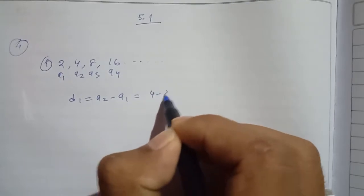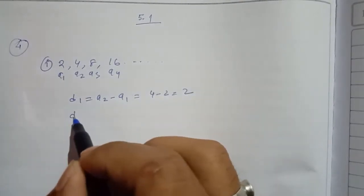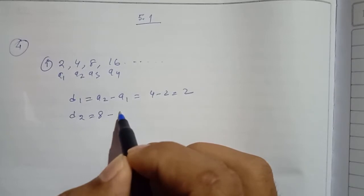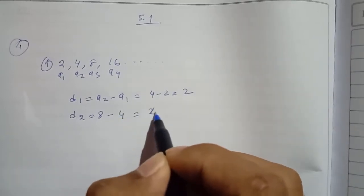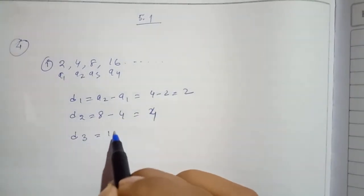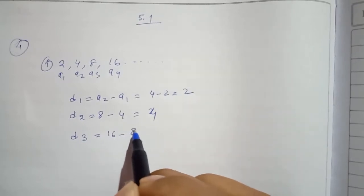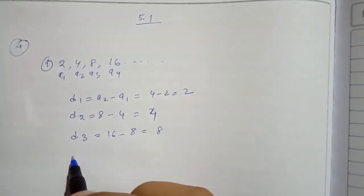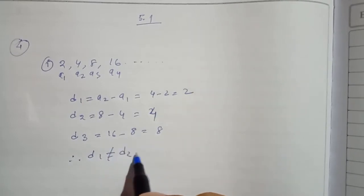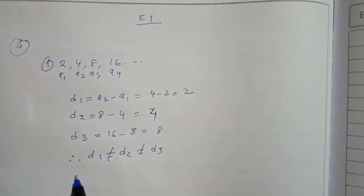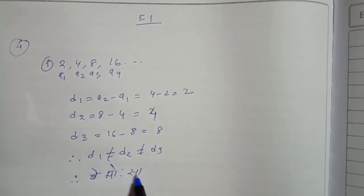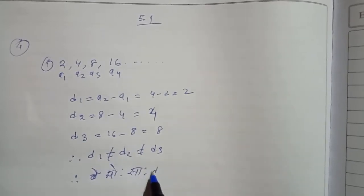A2 minus A1 equal to 4 minus 2 equal to 2. D2 is equal to 8 minus 4. D3 is equal to 16 minus 8 is equal to 8. Therefore, D1 does not equal D2 does not equal D3. Therefore, this is not an AP.